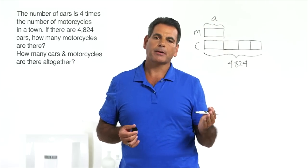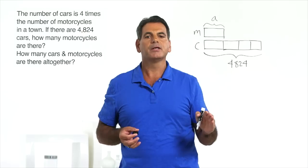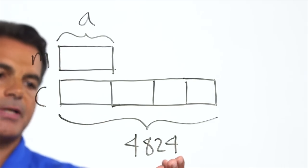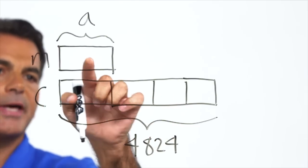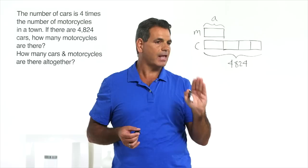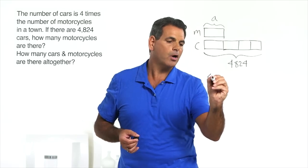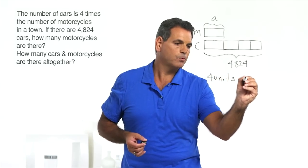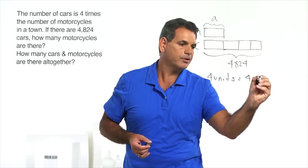Now, from the bar model, we should be able to derive the equation that we need to solve the problem. So this clearly tells us 4,824 divided by 4 will get us to this unit. And a good way to teach this to the students is like this. Four units equals 4,824.